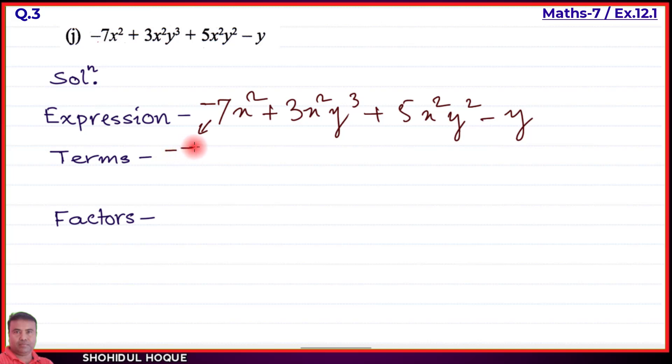The terms are: -7x², 3x²y³, 5x²y², and -y. For factors: the first term -7x² has factors -7, x, and x.